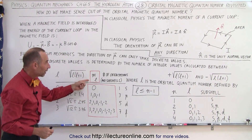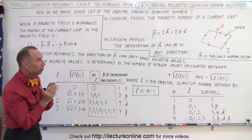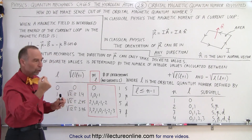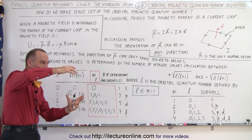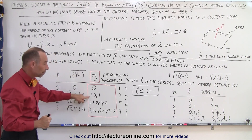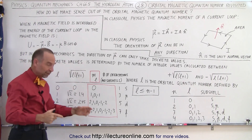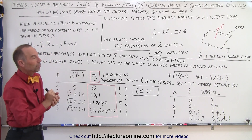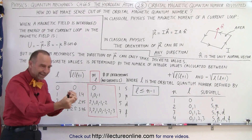The number of possible values for M sub L — the orbital magnetic quantum number — equals the number of possible orientations the magnetic moment can have. The magnetic moment in this case is created by the single electron moving around the nucleus of the hydrogen atom, which acts as a current loop and therefore has a magnetic moment. The orientation of that loop is determined by the number of values M sub L can have. So if there are three possible values, there are three possible orientations; if five, then five orientations; if seven, likewise. To make sense of the orbital magnetic quantum number: it represents the number of possible orientations the current loop can have, created by the electron inside the hydrogen atom.